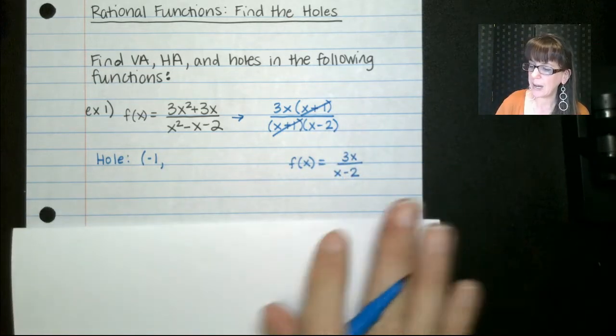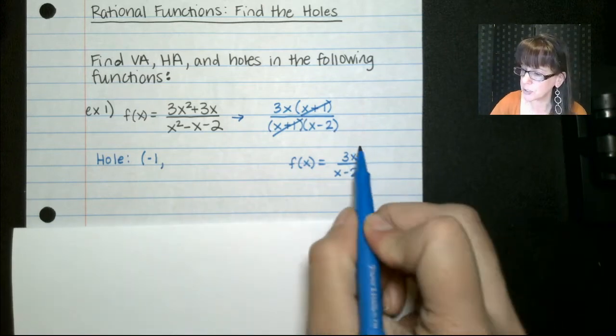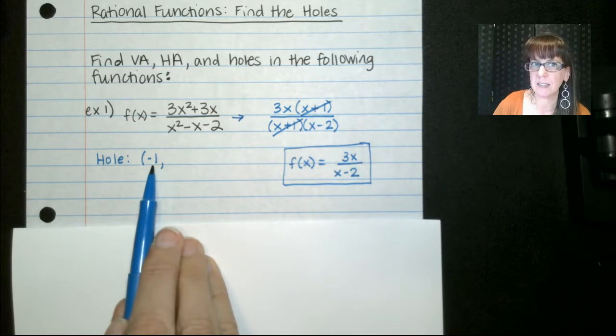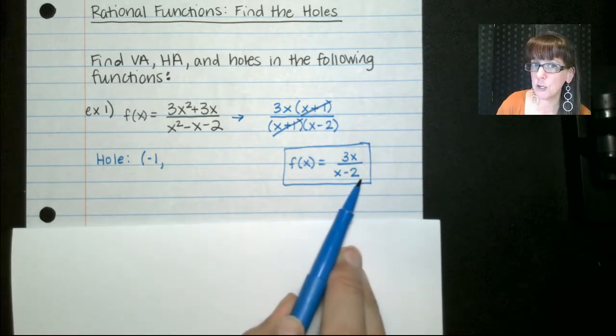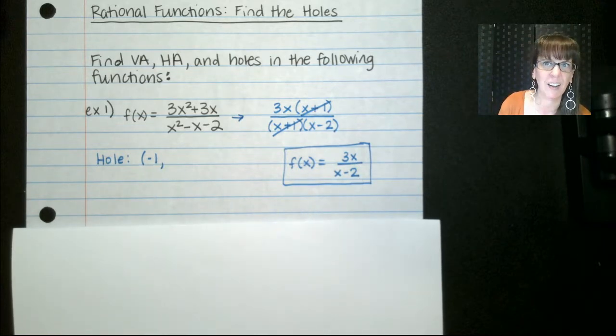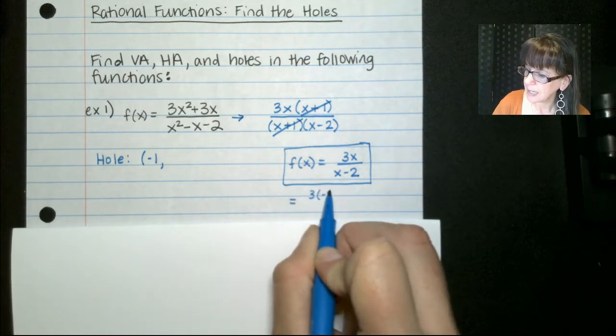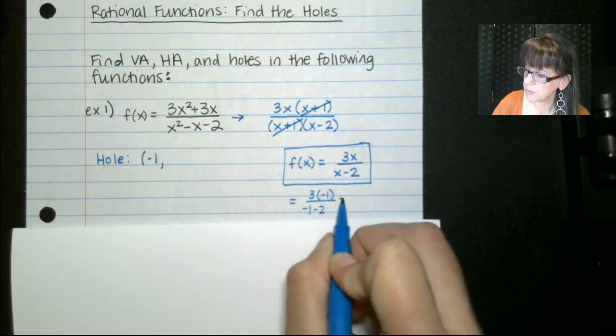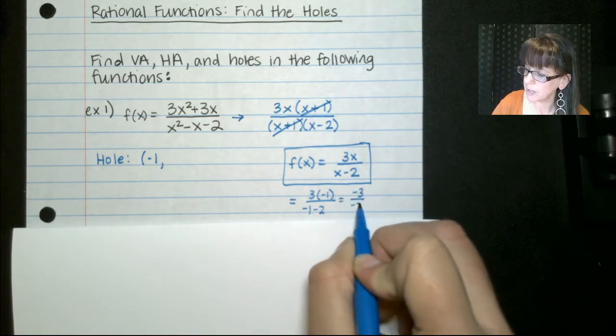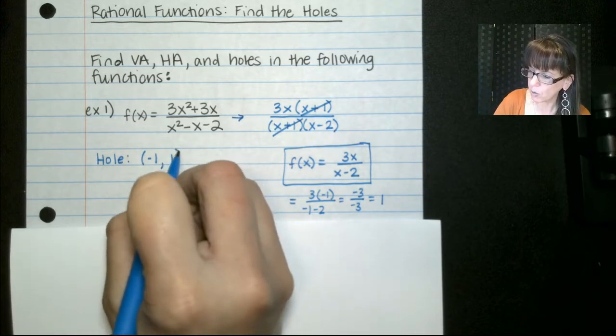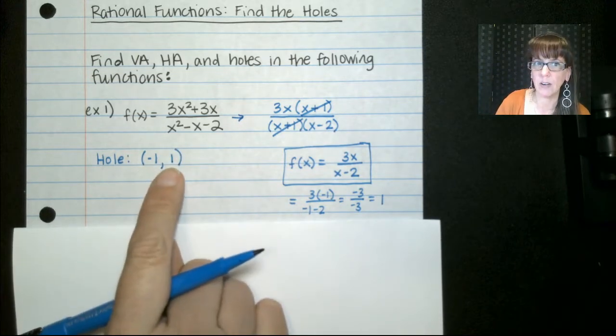So now that we have this as our new function that we are graphing, with this information, what we do is we take this negative 1 and we're going to plug it into that new function to figure out what our y or our f(x) is. So if we do that, we get 3 times negative 1 over negative 1 minus 2. That gives me negative 3 over negative 3, which gives me positive 1. So our hole occurs at (-1, 1).